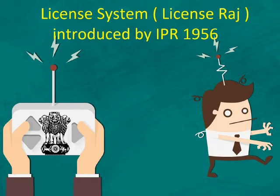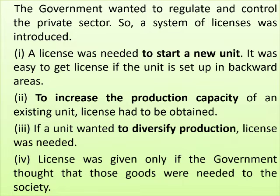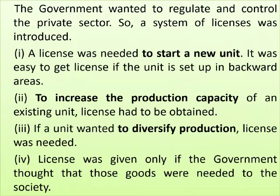What is the licensing system? License Raj was introduced by the Industrial Policy Resolution 1956. The government wanted to regulate and control the private sector, so a system of licenses was introduced. A license was needed to start a new unit, to increase the production capacity of any existing unit, and if a unit wanted to diversify production. A license was given only if the government thought those goods were needed by society.